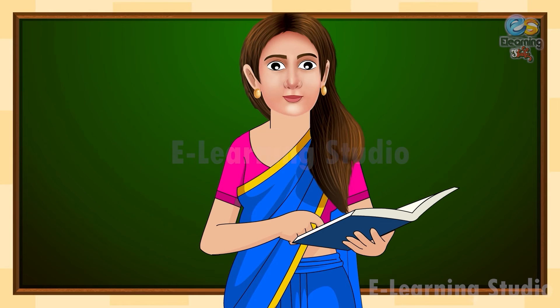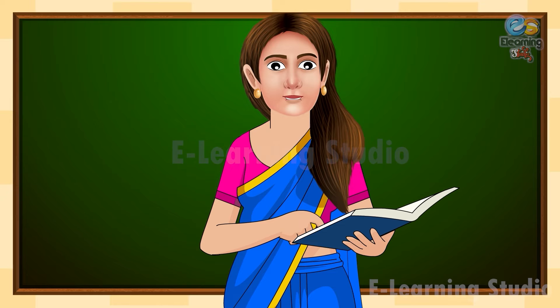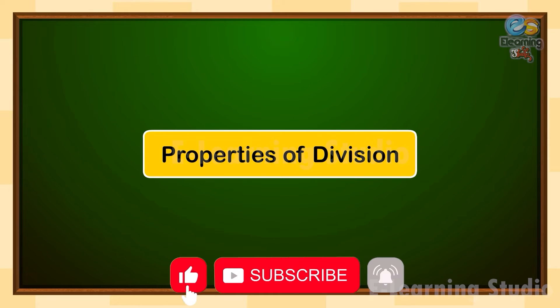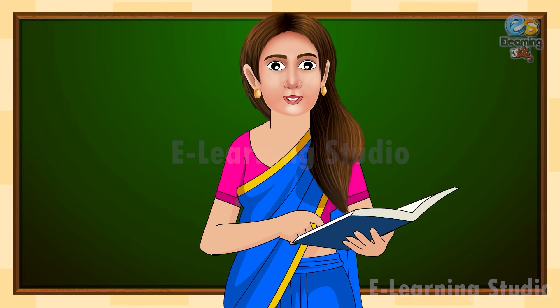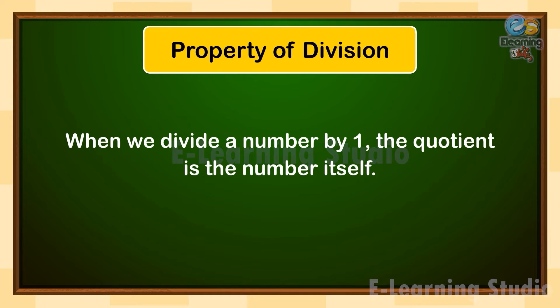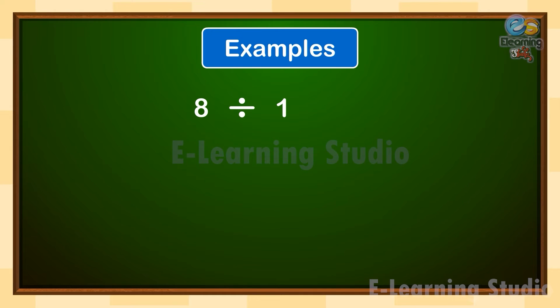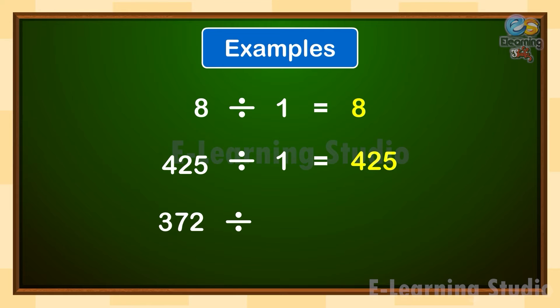Hope this is clear to all. Thank you and happy learning! Properties of Division. Hello children, welcome back. In today's video, we will learn a new concept which is Properties of Division. Let us look at the first property. When we divide a number by 1, the quotient is the number itself. For example: 8 divided by 1 is equal to 8; 425 divided by 1 is equal to 425; 372 divided by 1 is equal to 372.